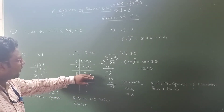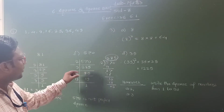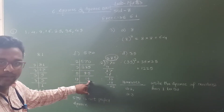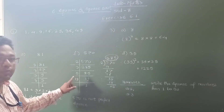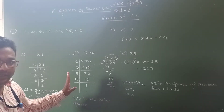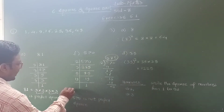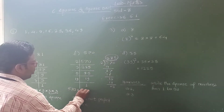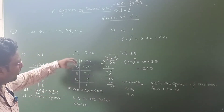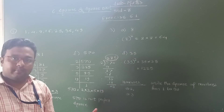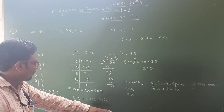Since 95 is not divisible by 3, we think about the next prime number. 95 is divisible by 5. Therefore 95 divided by 5, we get 19. Since 19 is a prime number, it is divisible by 19 only. So the next factor is 19. The prime factors of 570 are 2, 3, 5, and 19. We can write 570 = 2 × 3 × 5 × 19. These prime factors are not in pairs, therefore the given number is not a perfect square number.